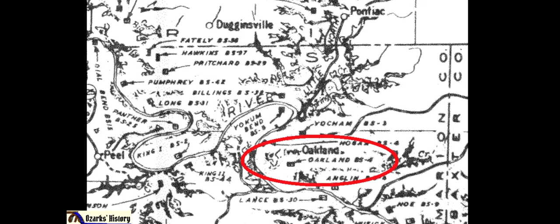We're going to start focusing and narrowing down on the Oakland Cemetery. I have circled Oakland, Arkansas, and there's the Oakland Cemetery right in the center. At the bottom we have the Anglin Cemetery right above, the Yoakum Cemetery a little bit above to the left, and on the other side of the river we have the Yoakum Bend Cemetery. Those cemeteries are very interesting and we are going to focus on those.